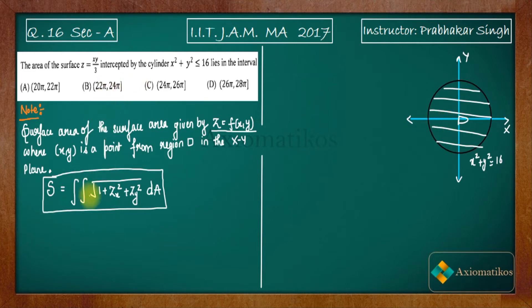Now let us see what is our Z. Z is XY by 3. So what will be Zx? The partial differentiation of Z with respect to X. So you will get Y by 3. What will be Zy? It will be X by 3. So what will be S?